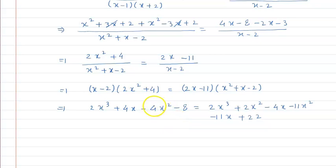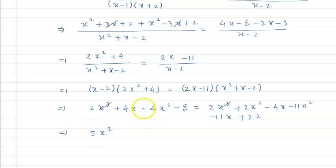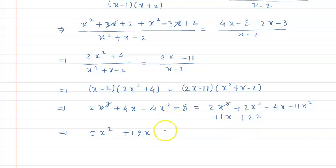We can see that 2x cubed cancels from both sides. Collecting terms: minus 4x squared minus 11x squared gives minus 15x squared; plus 4x, minus 4x, minus 11x gives terms combining to plus 15x; and 19x appears. Finally, minus 8 and minus 22 gives minus 30. So the equation becomes equal to 0.